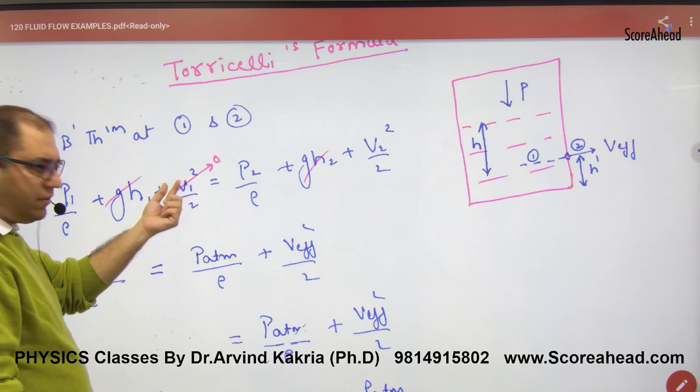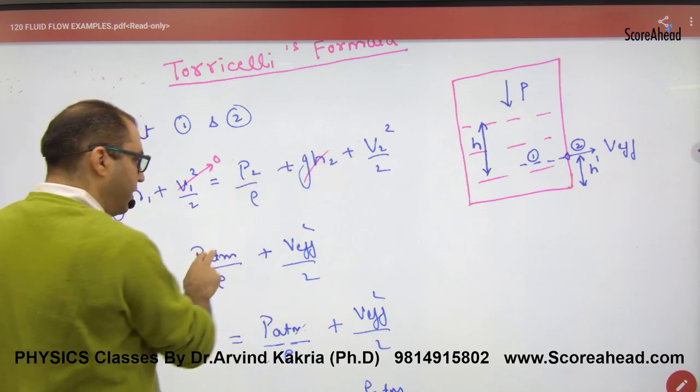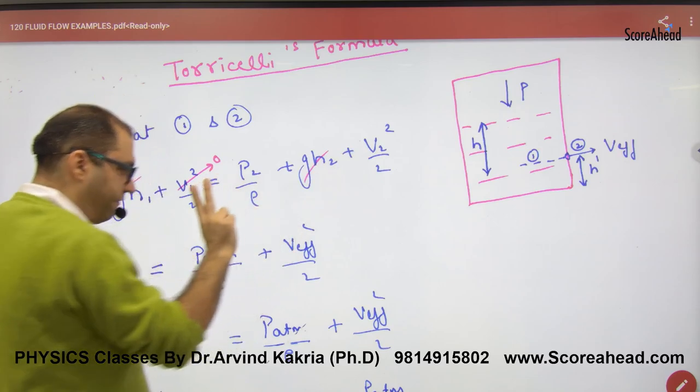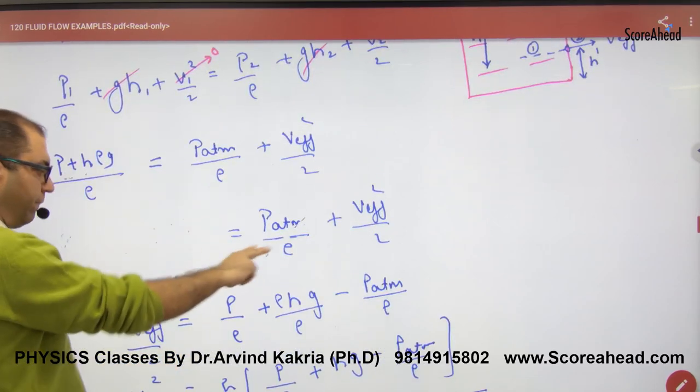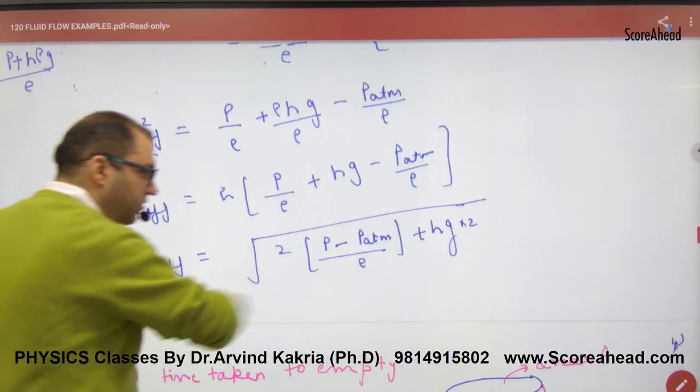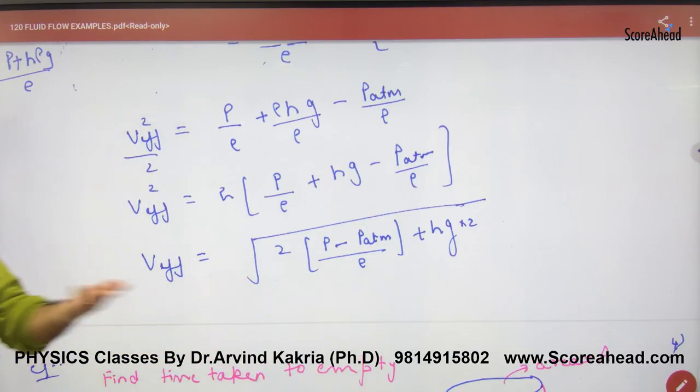At the top of the tank, the velocity is zero, and outside we have atmospheric pressure and the velocity of efflux. So we will solve this. When solved, the velocity of efflux that results is your Torricelli's equation.